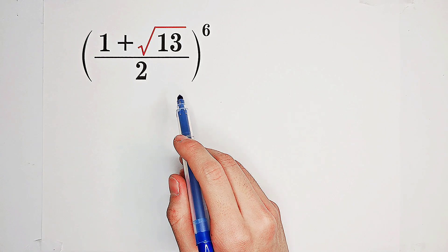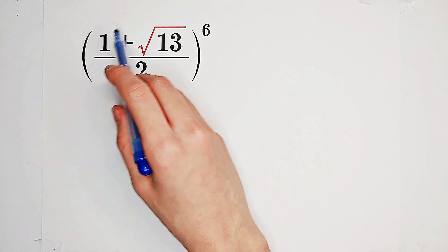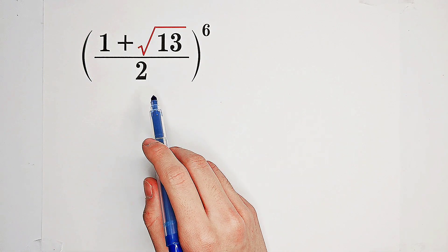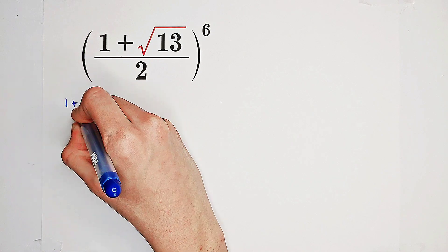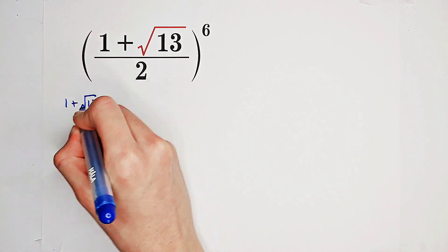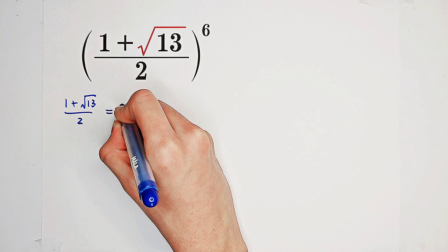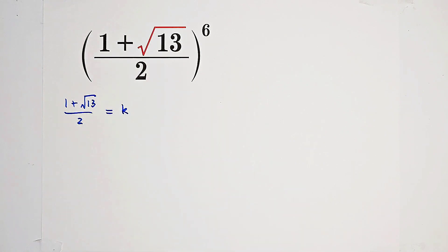So firstly, let's substitute a single letter, a single variable for our base. We can let 1 plus square root of 13 over 2 be equal to k for example.